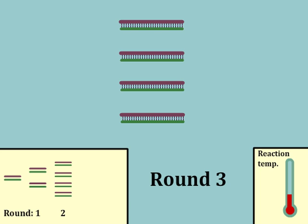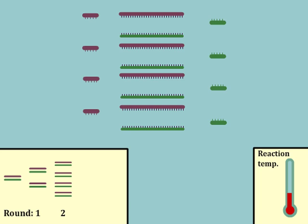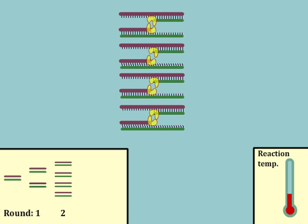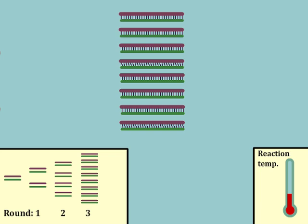In the third round, the same cycling of the reaction temperature occurs with melting of the strands, binding of primers when the temperature is lowered, and new strand synthesis when the strands are primed for DNA polymerase to begin adding nucleotides. At the end of round three, there are now eight double strand copies of the target sequence where there was originally only one.